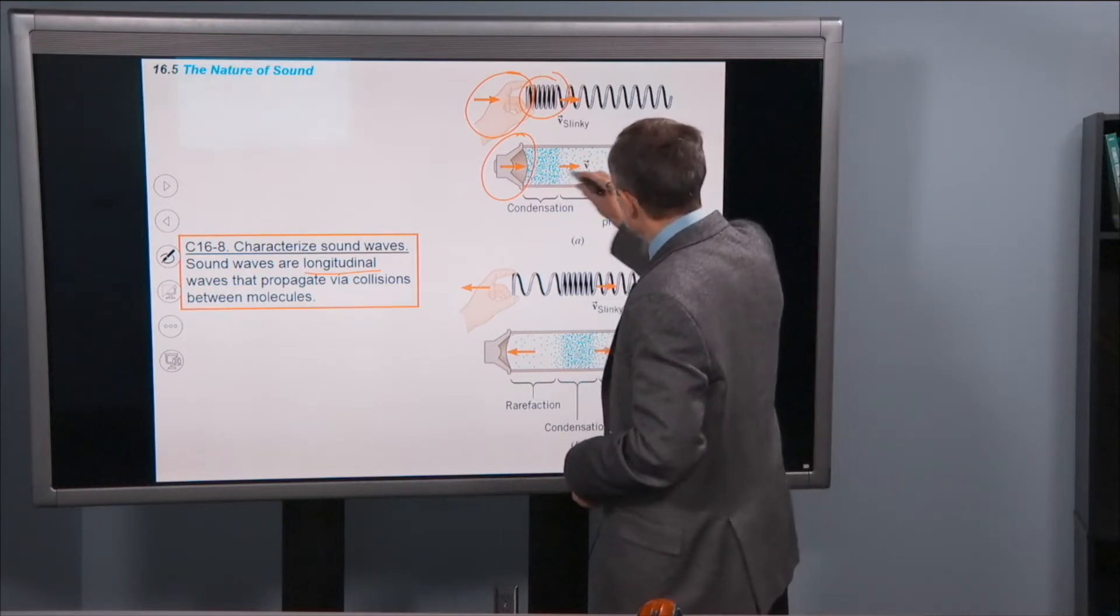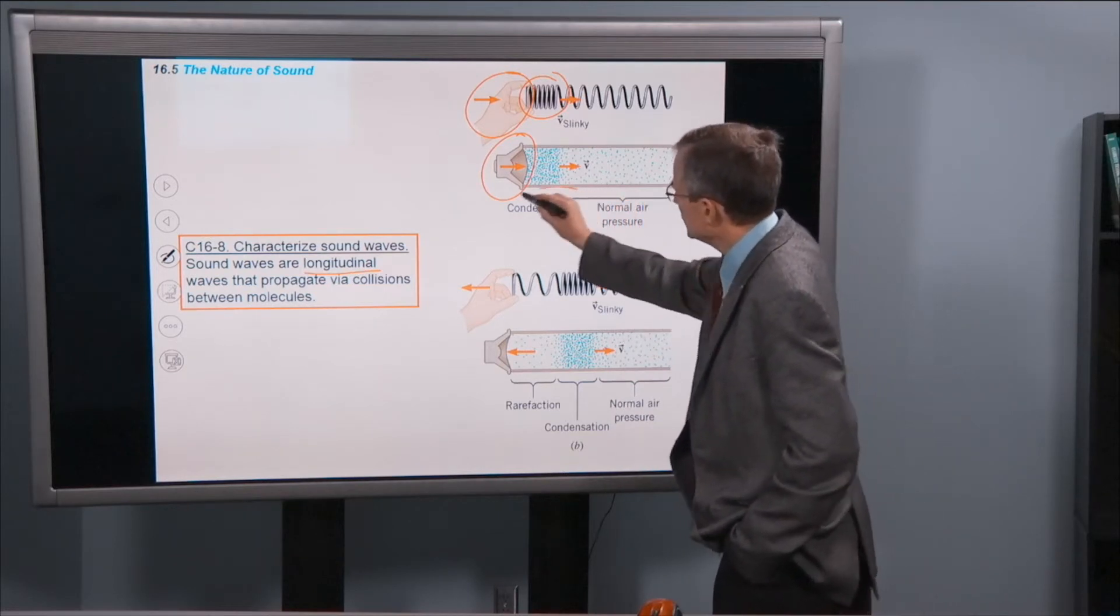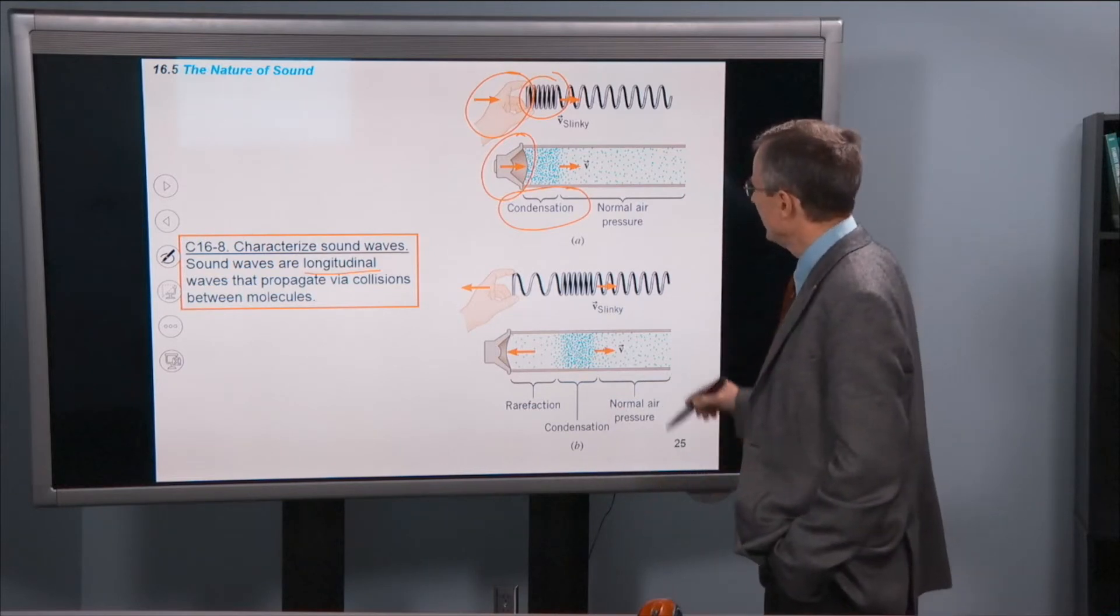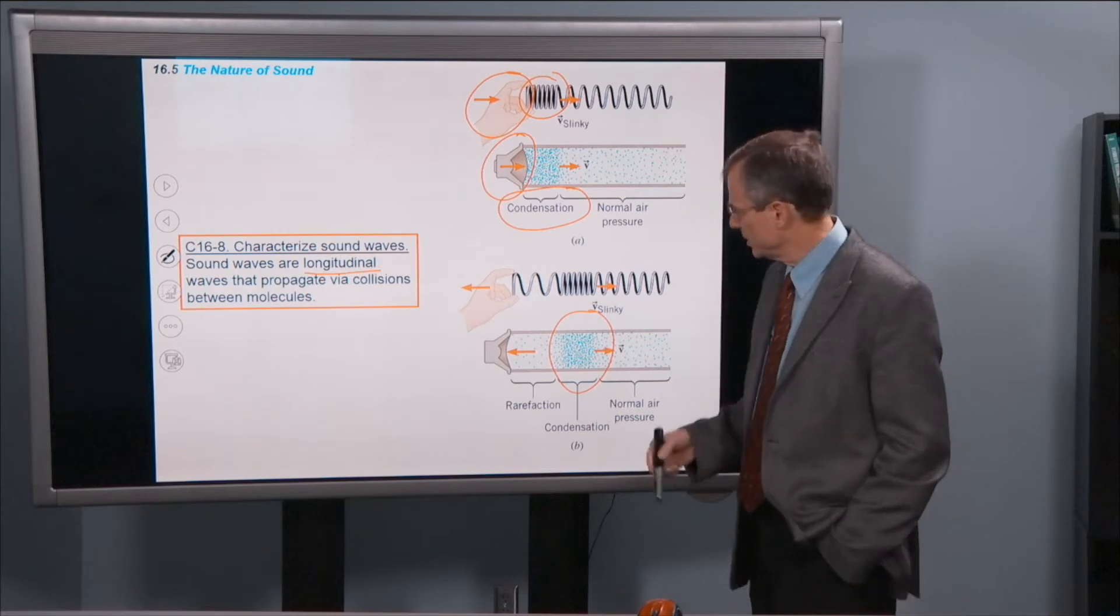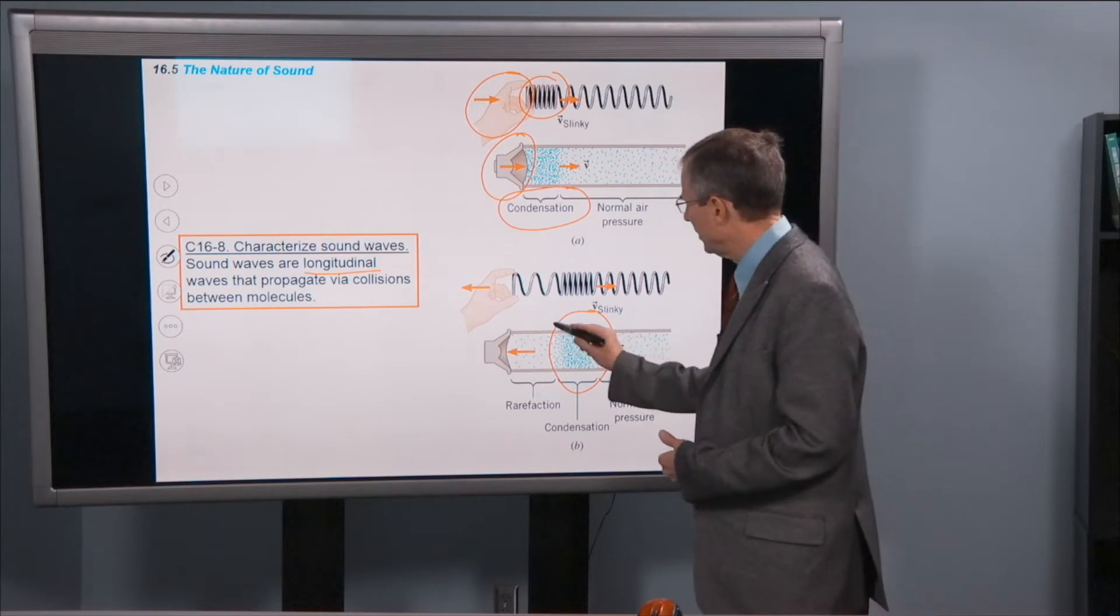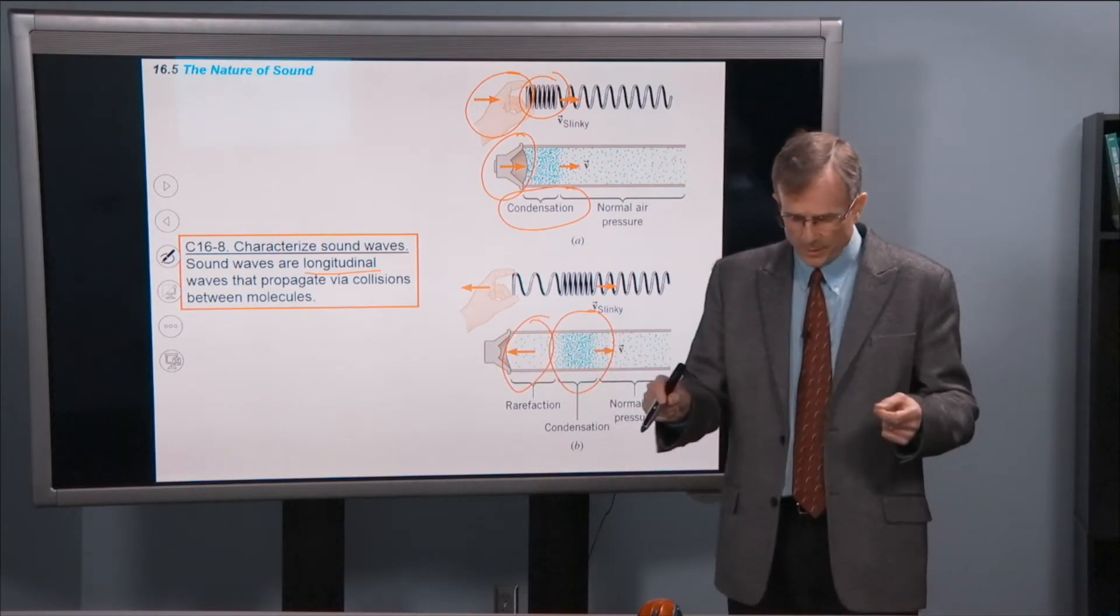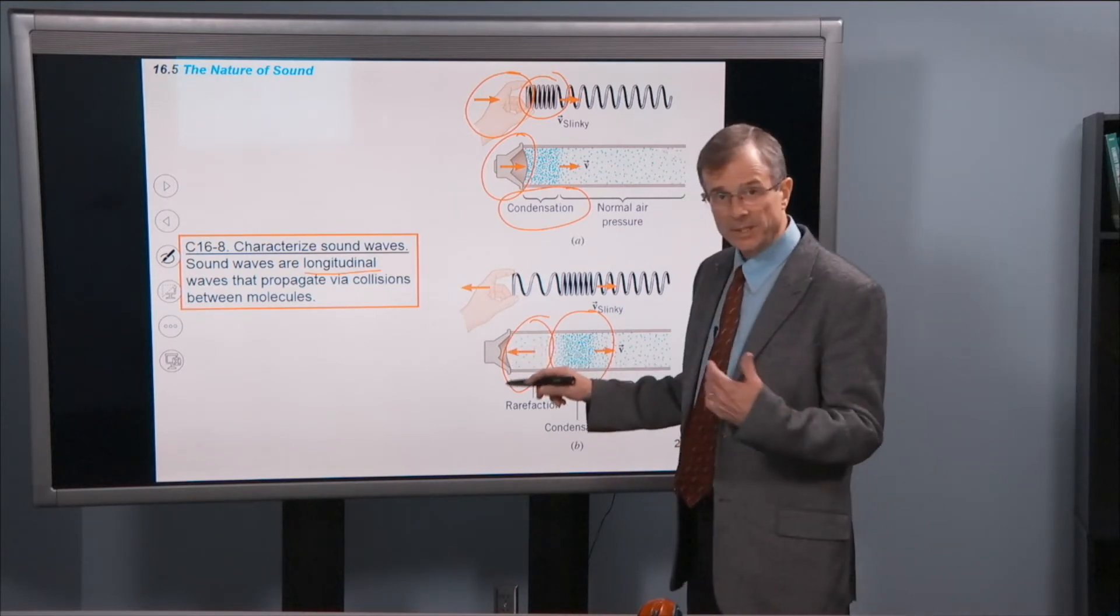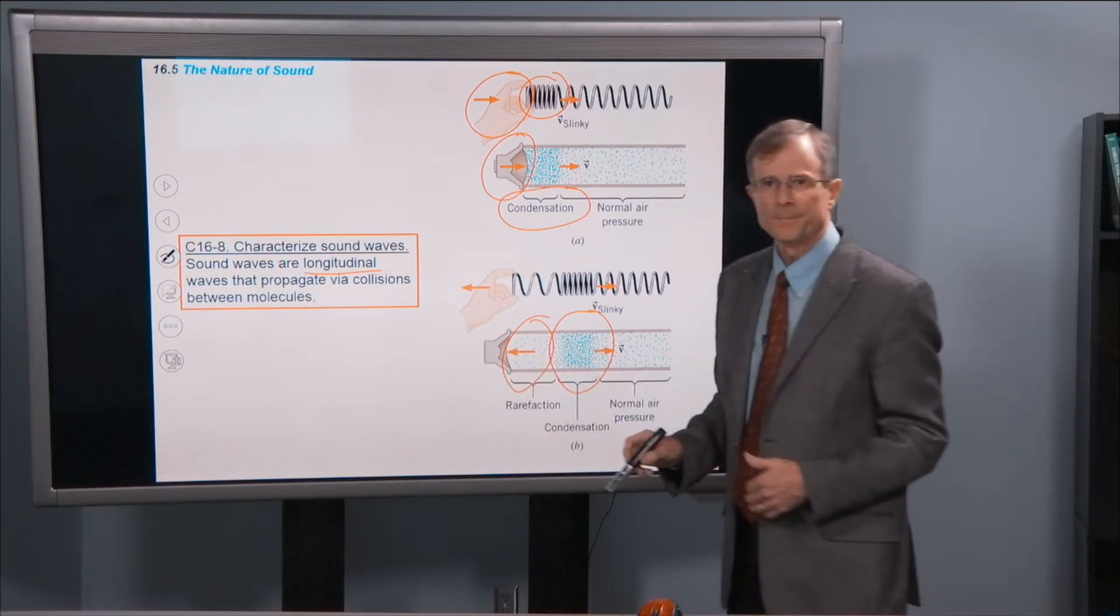And that compressed region wants to move to the right, and that compressed region is called a condensation. That's just the word that's used to describe it. Once that condensation region, or the compressed region, is moved to the right, then the air molecules that are left behind are in a rarefied state. So there are fewer of them, and they're not bouncing together as much. And then that leads to the next step of having that speaker move forward again and create another condensation.